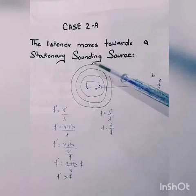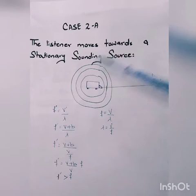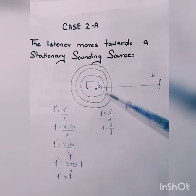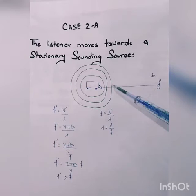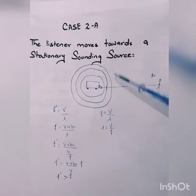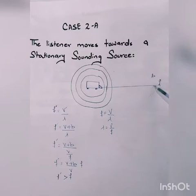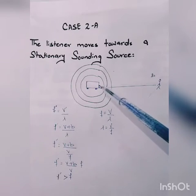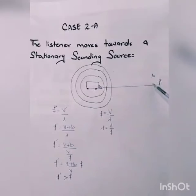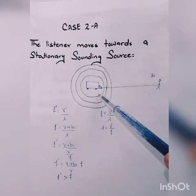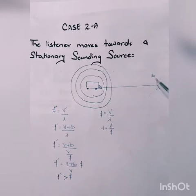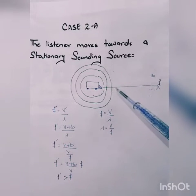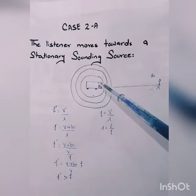We discussed the first case in which the sounding source is in motion and the listener is at rest. When the sounding source moves towards the listener, the frequency of the sound increases. When the sounding source moves away from the stationary listener, the frequency decreases and the pitch also decreases. We then discussed the case where the listener is in motion and the source of sound is stationary, and how this causes a change in frequency.